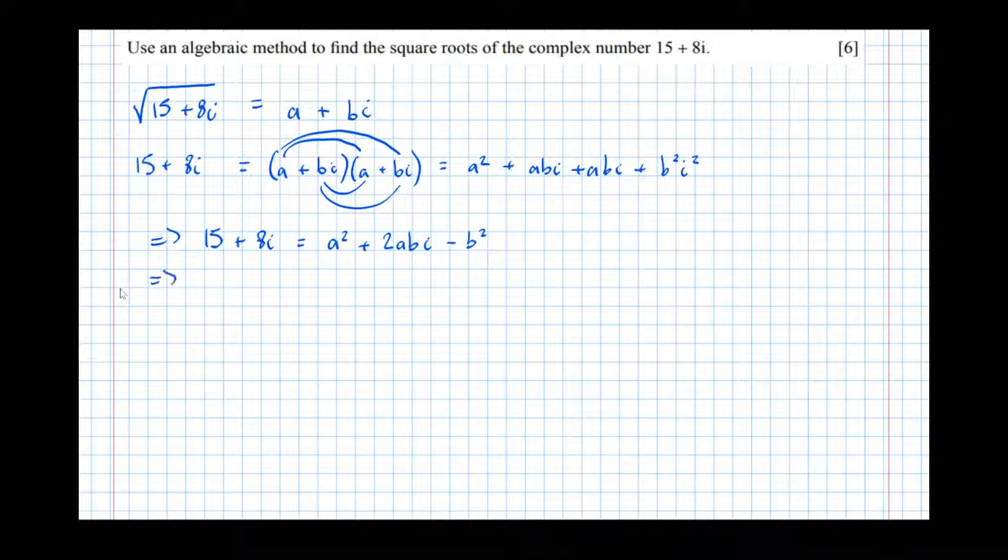So this implies that 15 plus 8i equals, let's do the real part first, a squared minus b squared, then the imaginary part, plus 2abi.